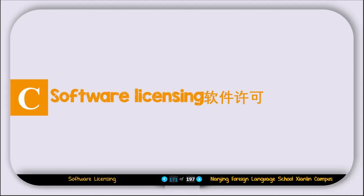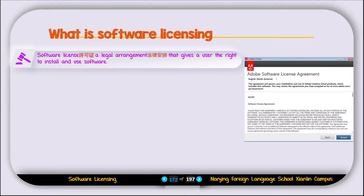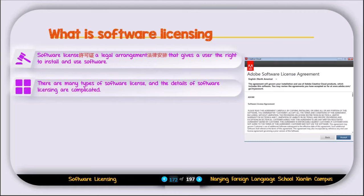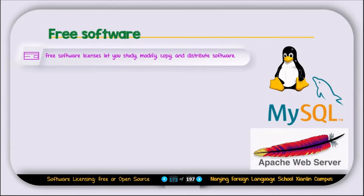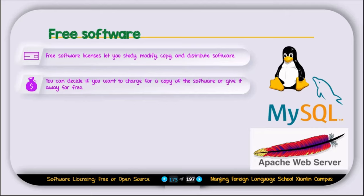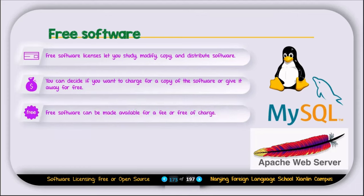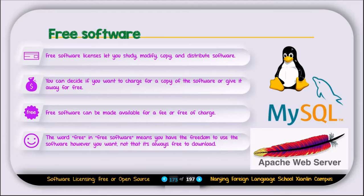Now let's discuss software licensing. What is a software license? A software license is a legal agreement that gives a user the right to install and use the software. There are two main types: free or open source, and proprietary. Free software license lets you study, modify, copy, and distribute the software. You can decide to charge for a copy or give it away for free. The word 'free' in free software means you have the freedom to use it however you want — not that it is always free to download.